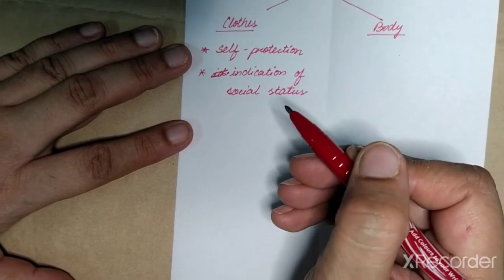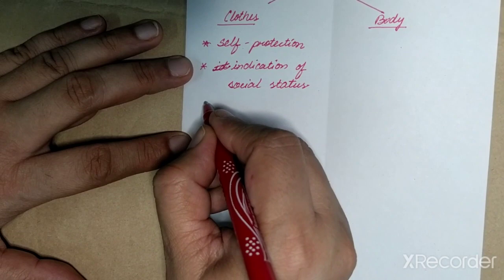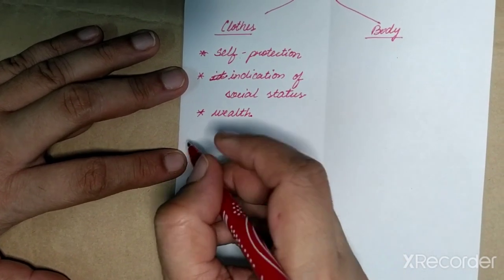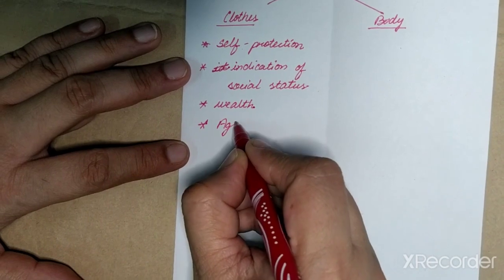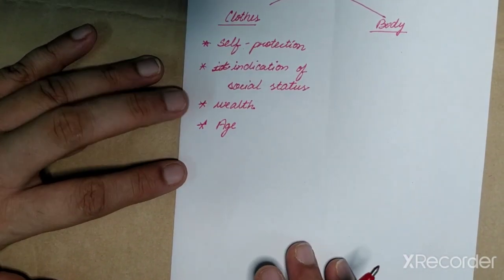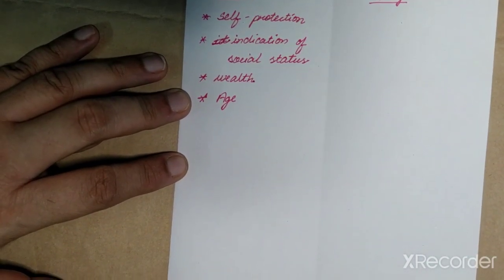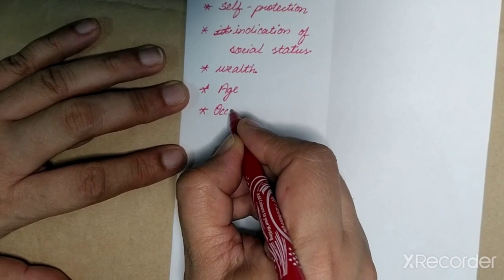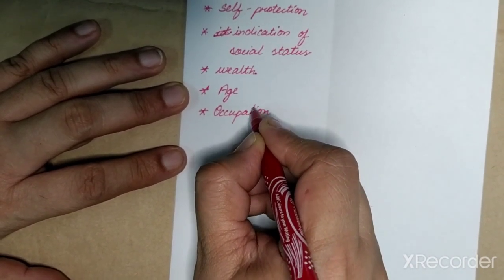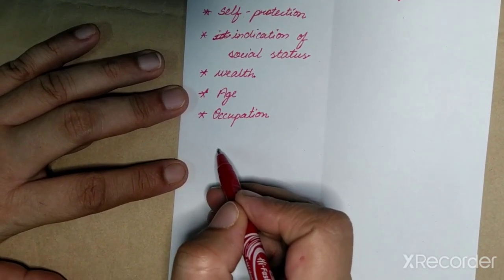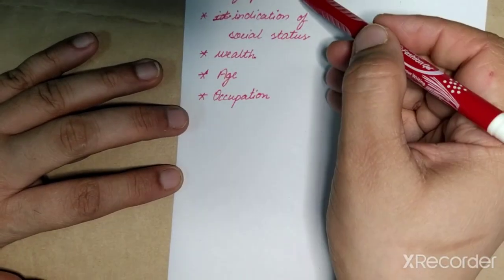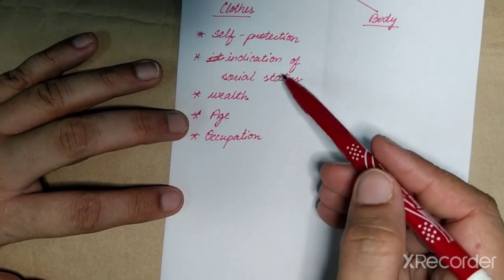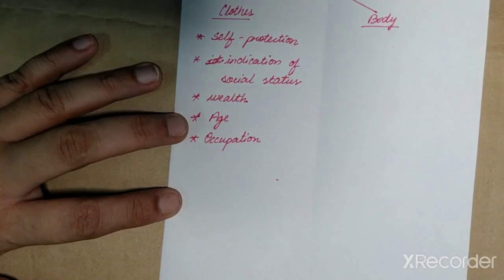Clothing also indicates your social status — where you are placed in society — whether you are rich, poor, or how wealthy you are. Clothes also indicate your age, and that is why designers always research which age group they are working for and what kind of costume they are developing. Clothing further indicates your occupation, that is, what your profession is. All these factors are responsible for how we adorn ourselves with a particular set of clothing.